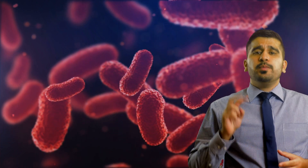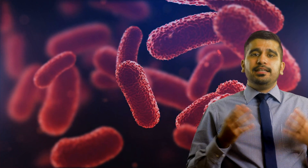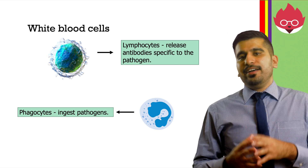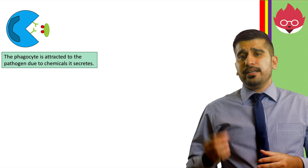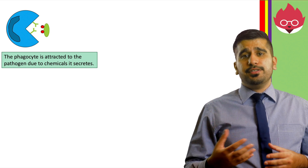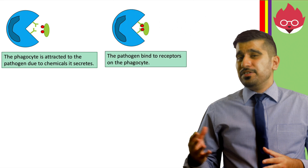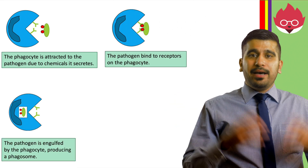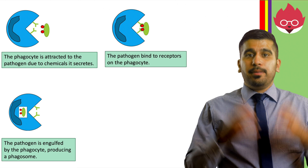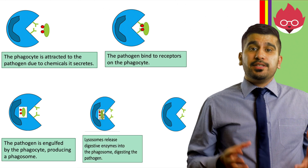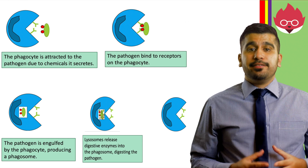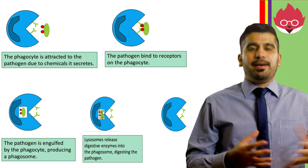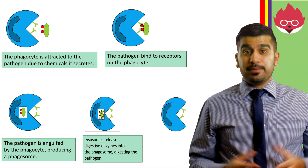White blood cells defend the body from pathogens. For IGCSE, you must remember two types: lymphocytes, which release antibodies, and phagocytes, which ingest pathogens. The phagocyte is attracted to pathogens due to chemicals it secretes. The pathogen binds to receptors on the phagocyte and is engulfed, producing a phagosome. Lysosomes inside the phagocyte release digestive enzymes into the phagosome, digesting the pathogen. The phagocyte is then free to repeat the process.